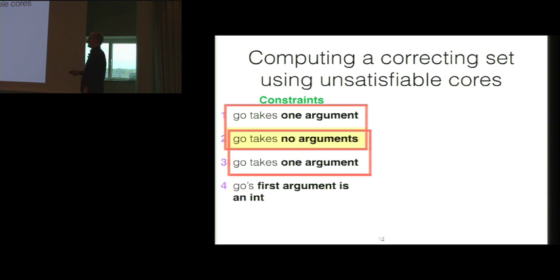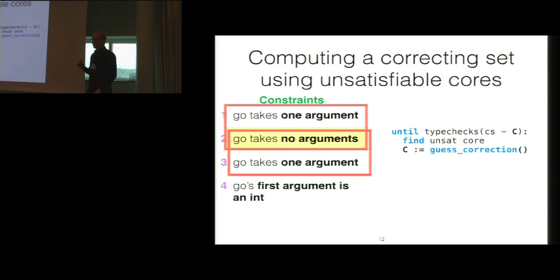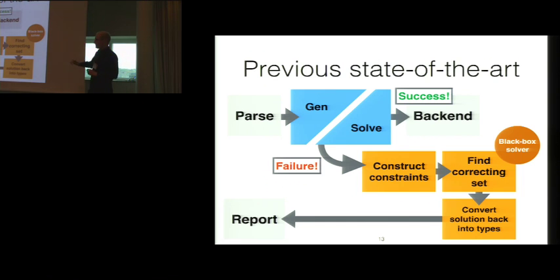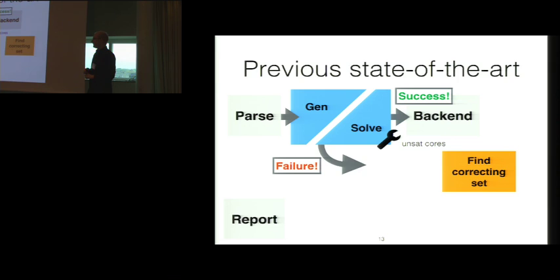So the overall algorithm for doing this is quite simple. Until everything type checks, find an unsat core, guess at a correcting set, and repeat. And these previous approaches I described earlier, the reason that they require you to convert your problem into their constraint system is for this middle line in order to find unsatisfiable cores. And we realized that you actually don't need to do this. This approach is applicable to any solver if you can modify that solver to produce unsatisfiable cores directly. So if you can make this change, then our crazy architecture diagram here for how everything works gets a whole lot simpler. You adjust your solver to produce unsatisfiable cores, and all these other steps go away, and you arrive at our framework.